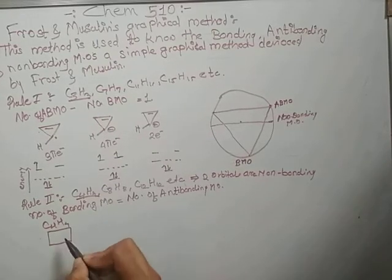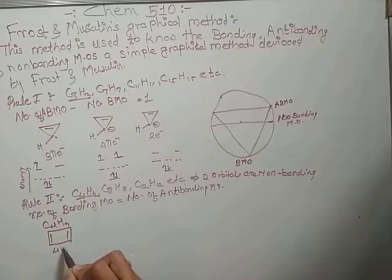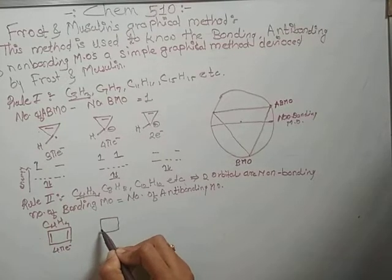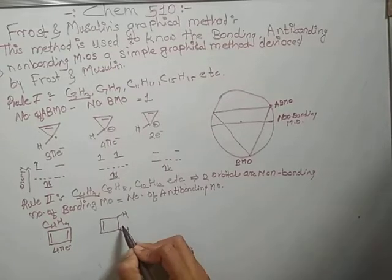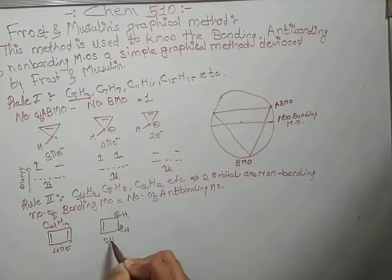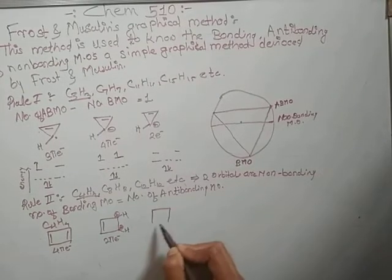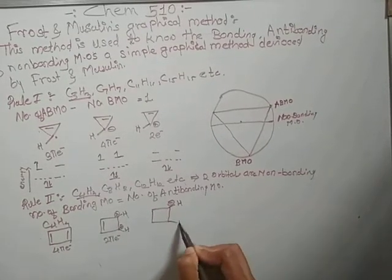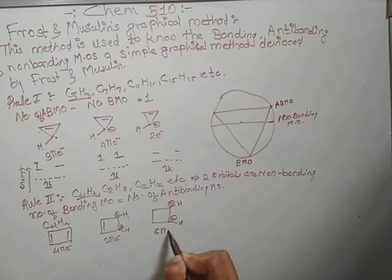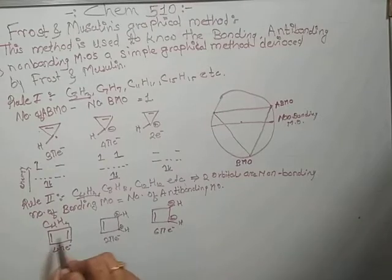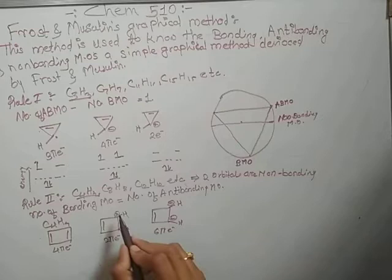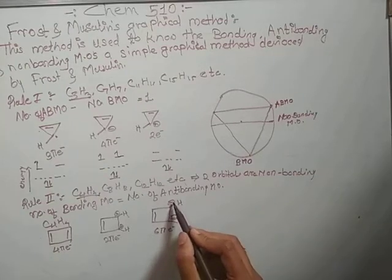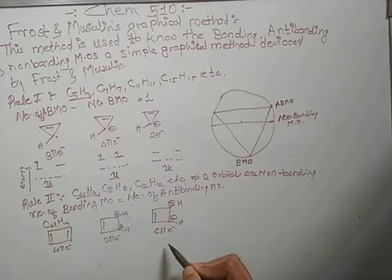For C4H4, cyclobutadiene: the neutral molecule has 4 pi electrons (from two double bonds), the radical has 2 pi electrons, the cation has no additional pi electrons (2 pi electrons from one double bond), and the anion has 6 pi electrons (2+2+2).